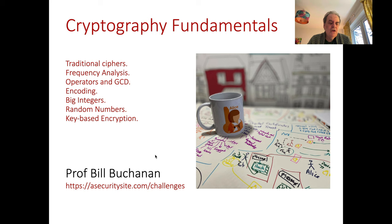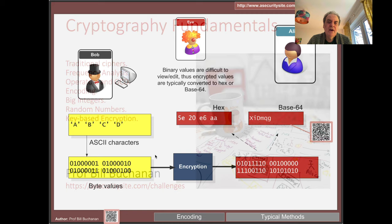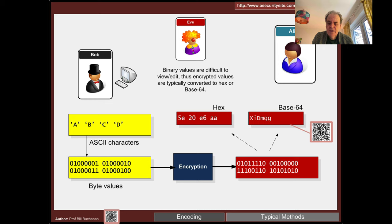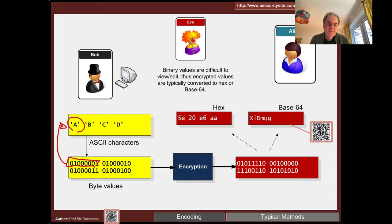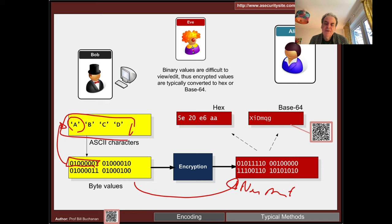That covered traditional ciphers. Now let's look at how we encode characters. We encode from a binary format into a format we can interpret. Typically we have ASCII characters — 'A' is represented by a specific bit pattern. When displayed we see the character, but when we cipher we often convert to non-printable characters. So we need a way to represent them in a printable form.